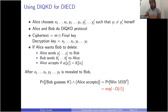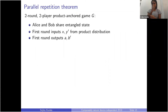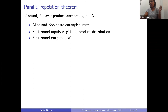Our main result is that we show this probability is exponentially small in L as well, and this is done by our parallel repetition theorem. The parallel repetition theorem is for a general type of game. Alice and Bob share some entangled state, and their first round inputs X and Y' are from a product distribution. We call this type of game a two-round product anchored game — product anchored because the first round inputs are from a product distribution, and the first round inputs are anchored with respect to the second round.